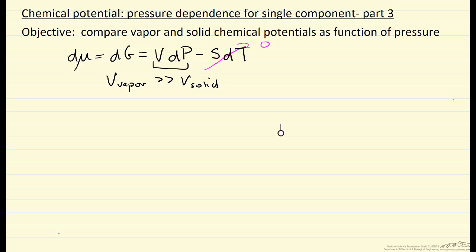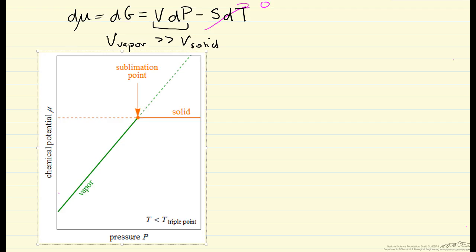Let's look at a diagram that shows these plots. Here we see in the plot of chemical potential as a function of pressure that the slope for the vapor line is much larger than the slope for the solid line because the volume of the vapor is much larger.